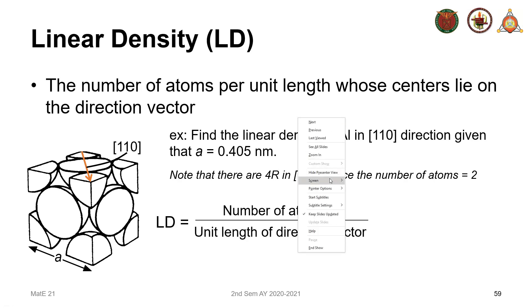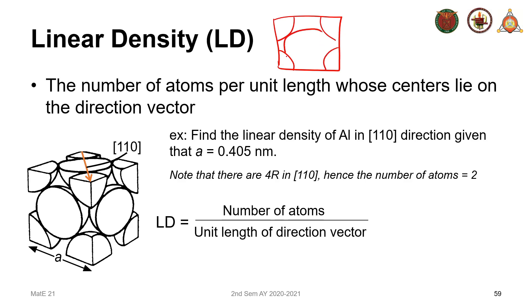So for this one, it will serve us to draw for clarity. This is the top view of that cell. This is [110] direction, so we're looking for the linear density along this direction. This is our formula: number of atoms over the unit length of the direction vector.